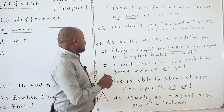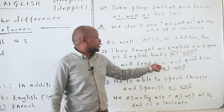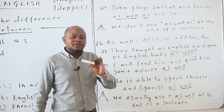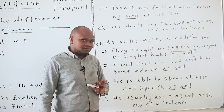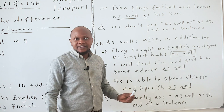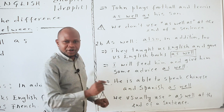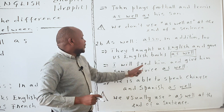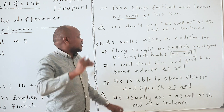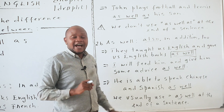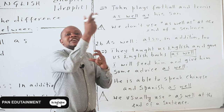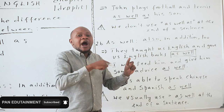Another example: 'I will feed him and give him some advice as well.' As well comes at the end of the sentence. You cannot say 'I will feed him as well I will give him some advice' — that is wrong. But you can use as well as in the middle: 'I will feed him as well as give him some advice.' As well as goes in the middle; as well goes at the end.